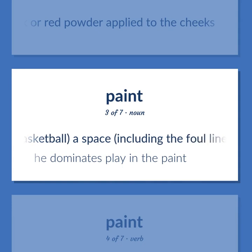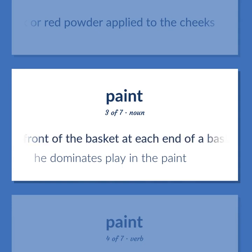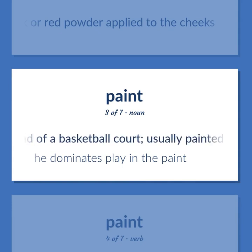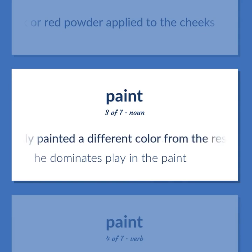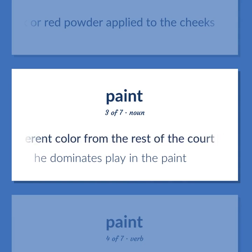Basketball. A space, including the foul line, in front of the basket at each end of a basketball court, usually painted a different color from the rest of the court. He dominates play in the paint.